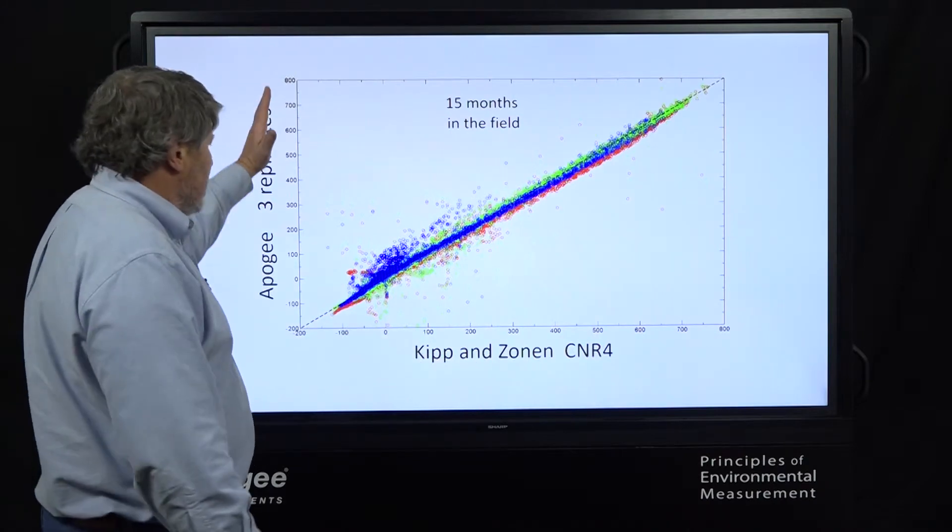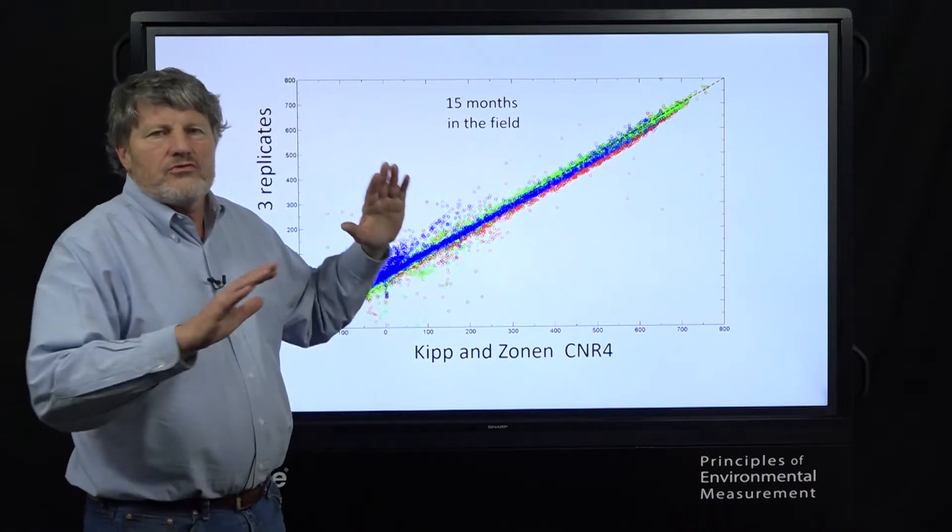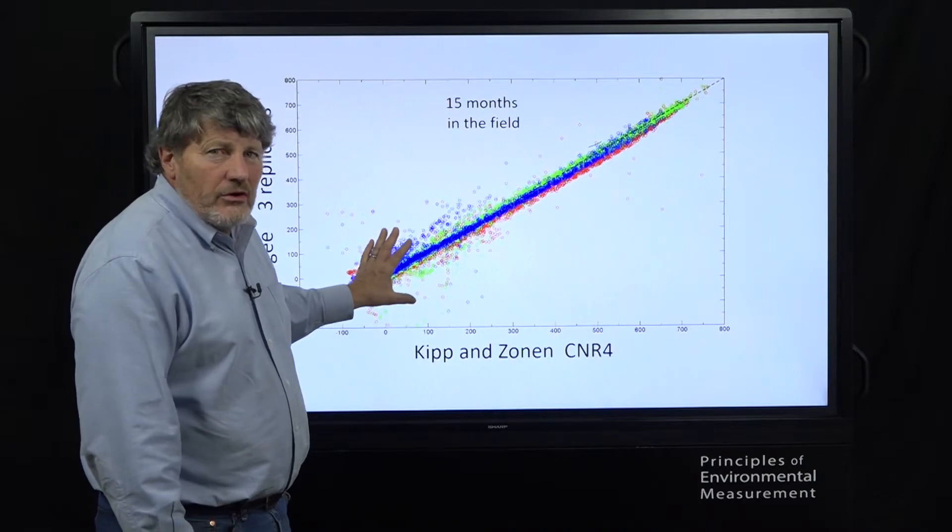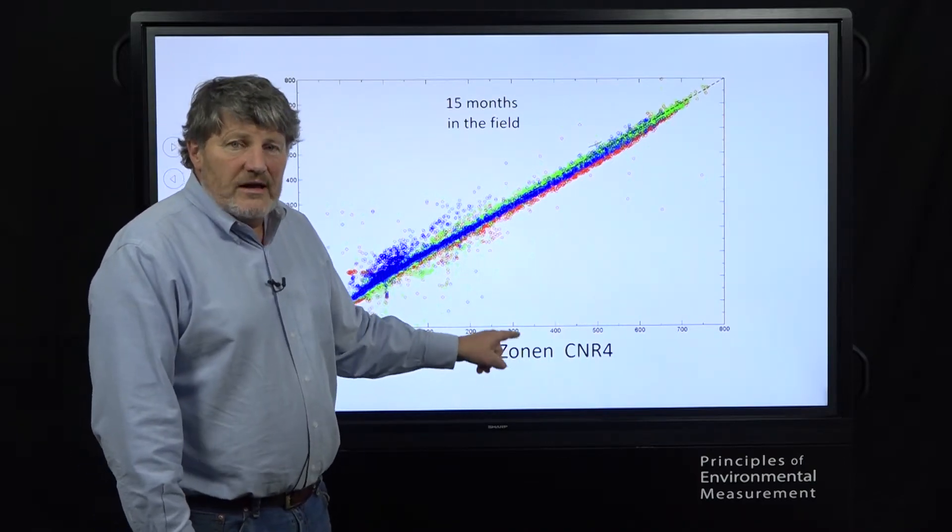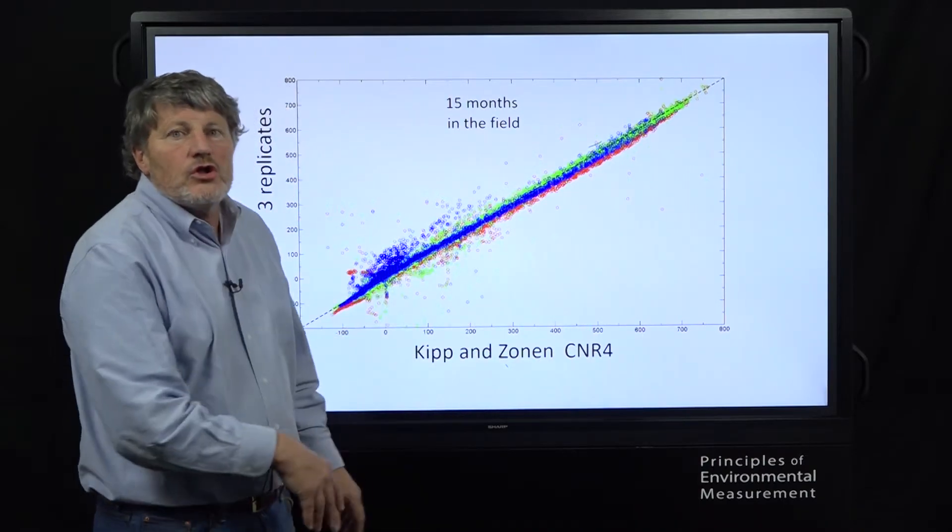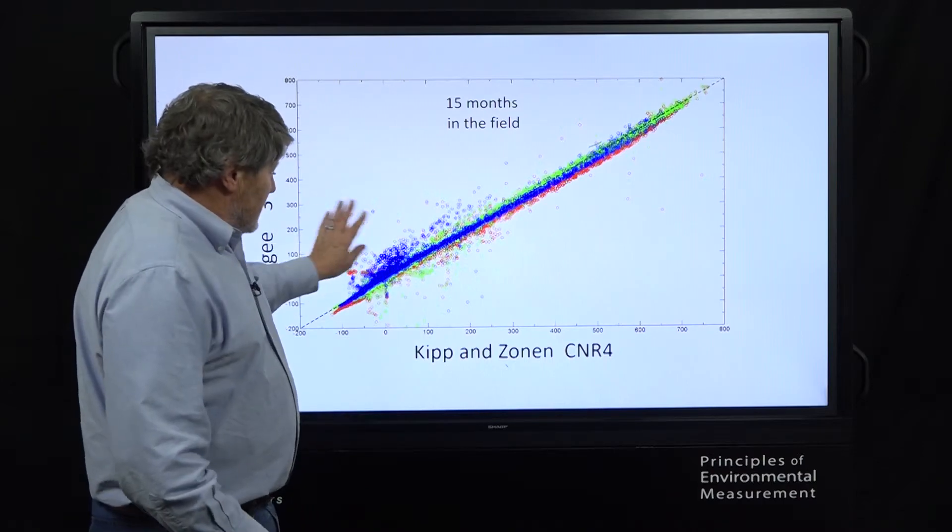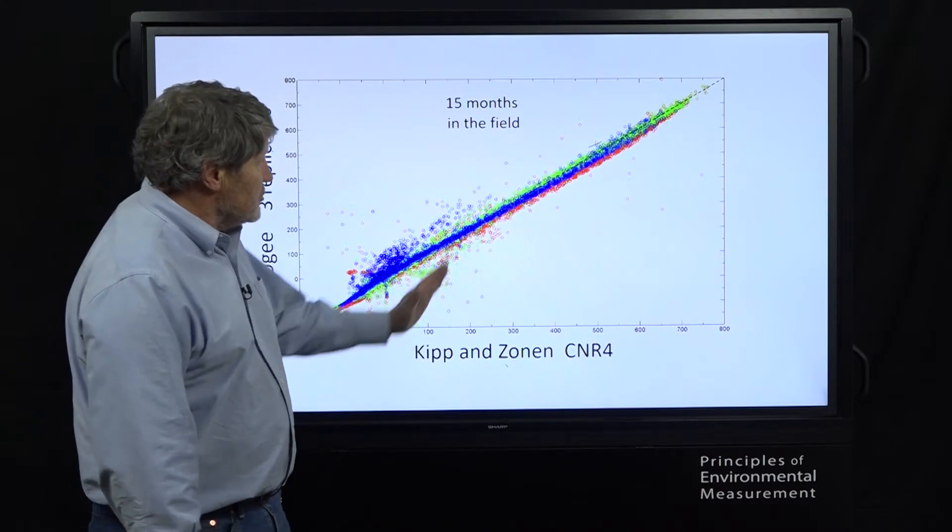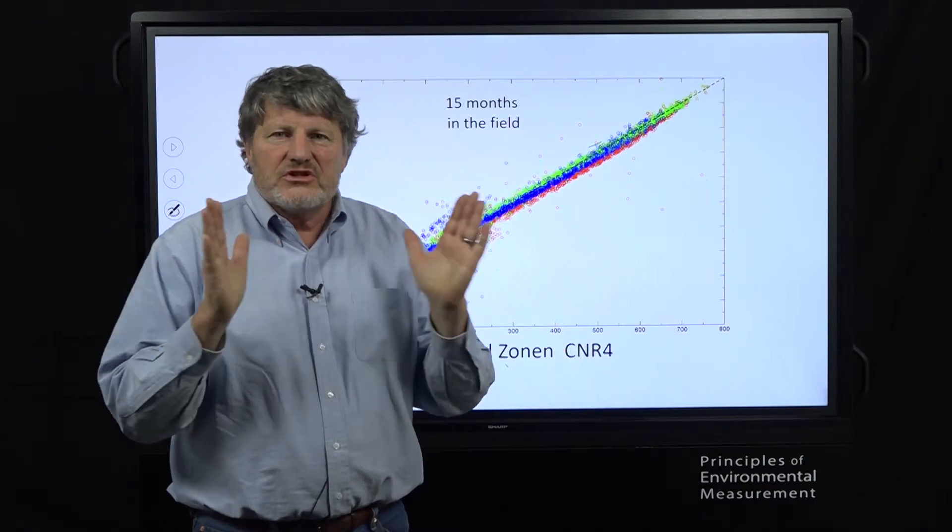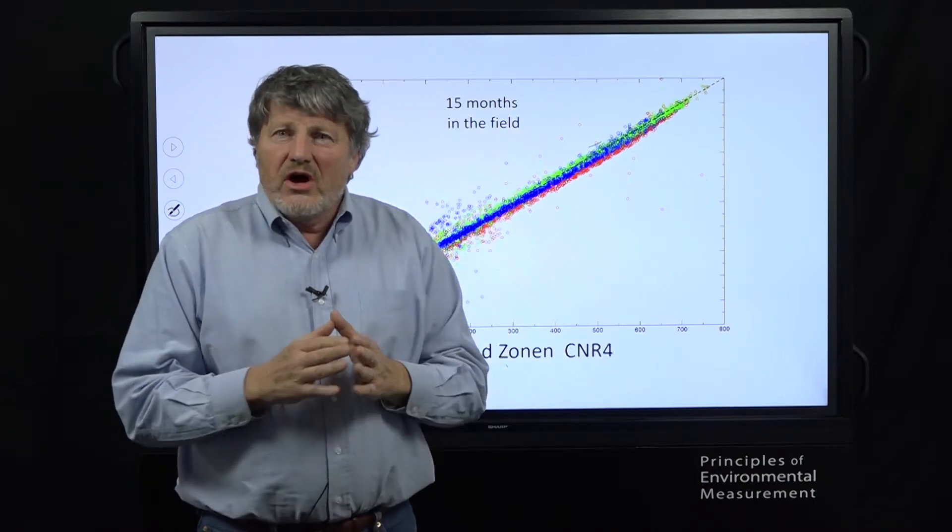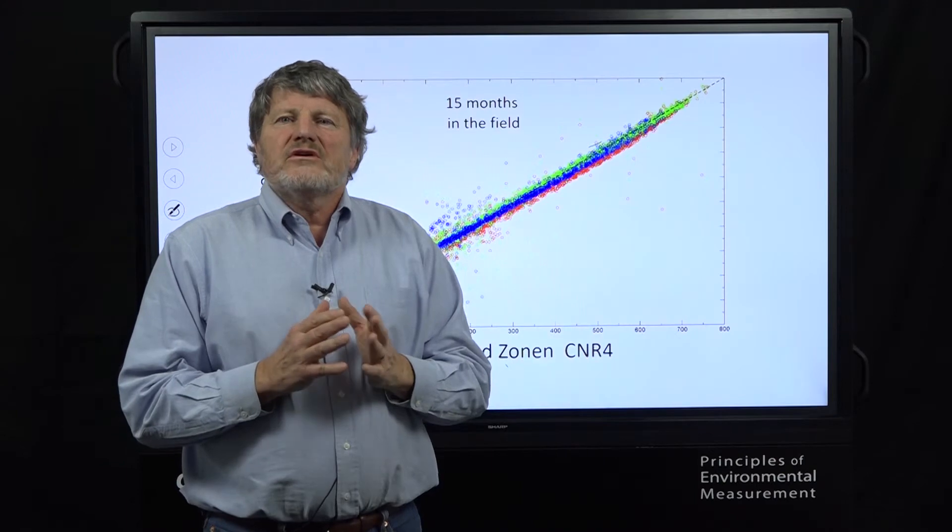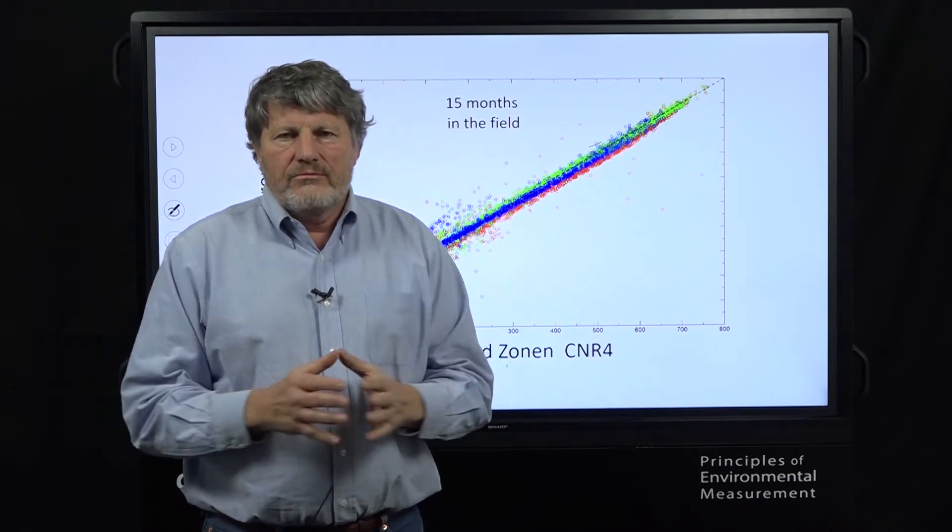Here's the reference, CNR4. Here's the three replicate Apogees. We were thrilled to see this tight line here. If you look closely at this, you can see some scatter. The CNR4 was not heated and ventilated, so there was days with dew which caused that to read low. So some of these data in here are caused by problems with the reference, not by the Apogees. These high radiation days where there was no dew and all three replicate instruments lined up beautifully. That's what we've done to make this accurate for the user is refine and refine and refine. Not only is it good out of the box, it's stable over many years.